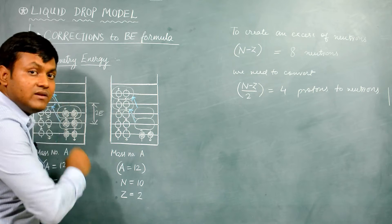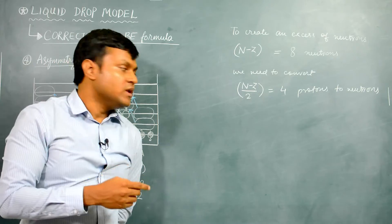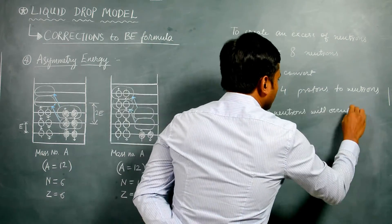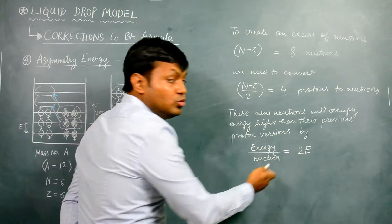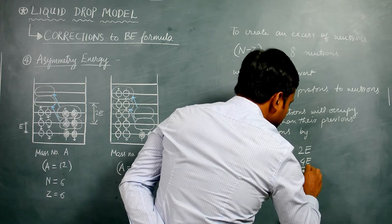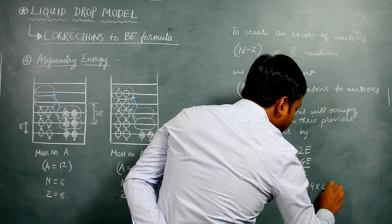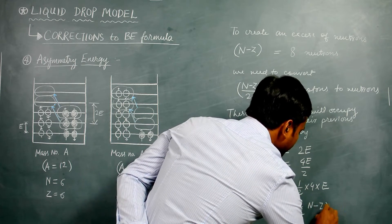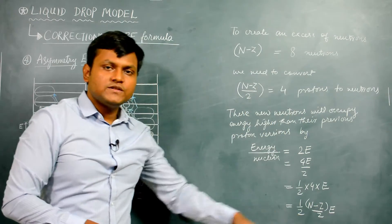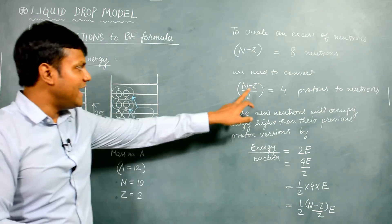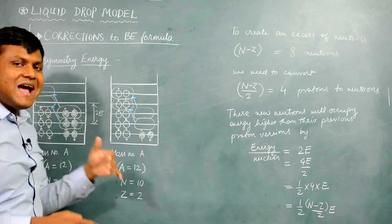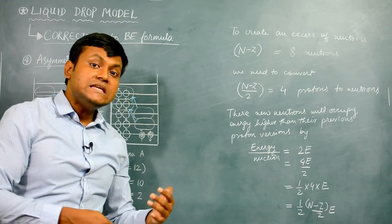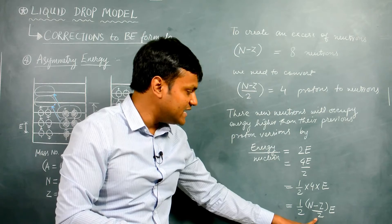What is the change in energy of these new neutrons compared to the previous proton versions? These two protons, the moment they became neutrons, jump to a particular energy level. The difference in energy between these two energy levels is equal to 2E, where E is the energy level spacing. Similarly, the other two protons also jump to a new energy level with an energy difference of 2E. So these new neutrons occupy an energy level higher than the previous proton versions by an amount of 2E, which can be written as (1/2) × (N−Z) × E, where (N−Z)/2 is the number of protons converted.